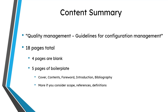For example, you have the cover, you have the table of contents, there's a foreword, an introduction, and a bibliography with like three references in it. But in addition to those five pages of boilerplate, you also have the start of the content, which includes scope, references, and definitions, which is like another page of boilerplate.